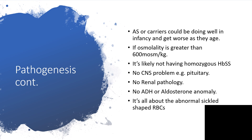If the lab has done a good job with no mixing up of samples, and the report has been read accurately, then if the osmolarity is 600 milliosmoles per kilogram or greater, you can rule out hemoglobin SS — this person is not a sickle cell disease patient.